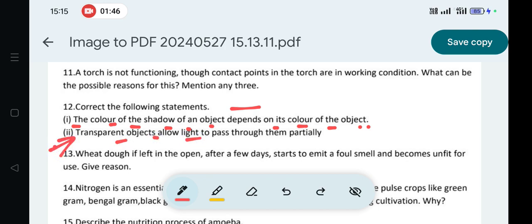Transparent objects allow light to pass through them partially. The correction is: transparent objects allow light to pass through fully, not partially.